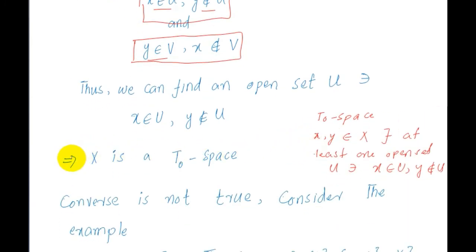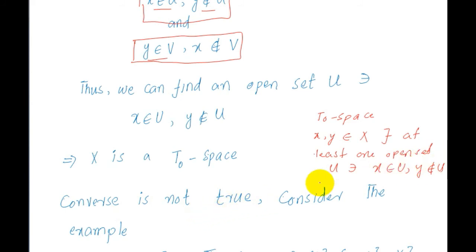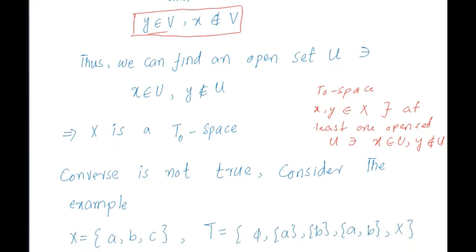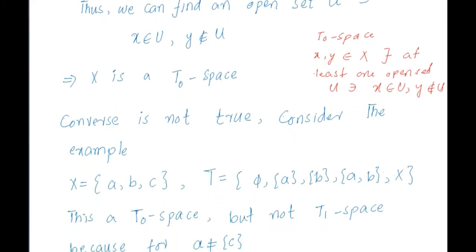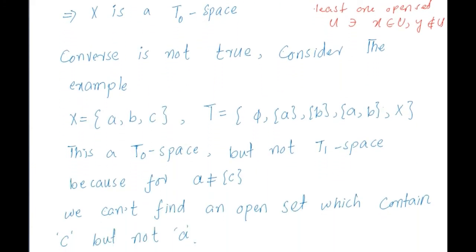Since we only need just one open set to satisfy T0, this implies X is a T0 space. However, the converse of this theorem is not true — that is, every T0 space is not necessarily a T1 space.